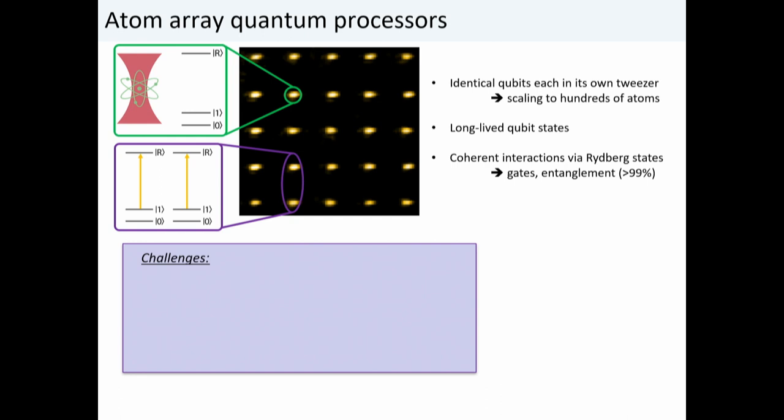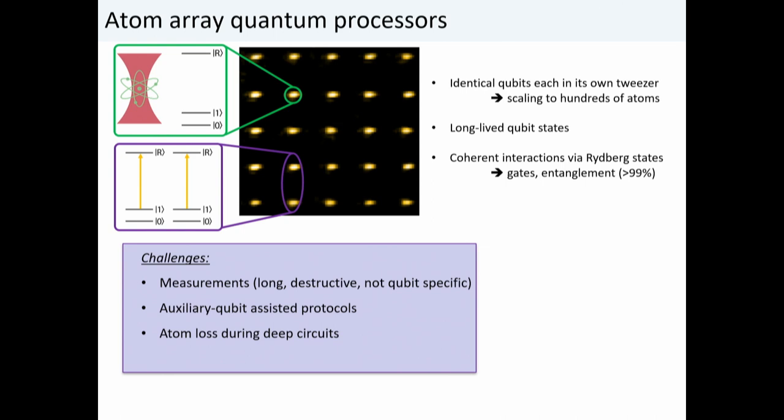Despite all these wonderful properties, there are still challenges. Probably the biggest challenge is measurements. Measurements are ordinarily done via fluorescence, which is long, destructive, and often not qubit-specific. Because measurements are hard, auxiliary qubit-assisted protocols are also hard. Moreover, we have to contend with atom loss during deep circuits, and there's no straightforward way to do individual addressing at large scale.